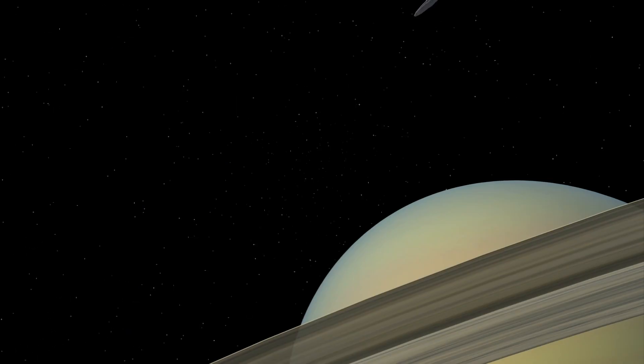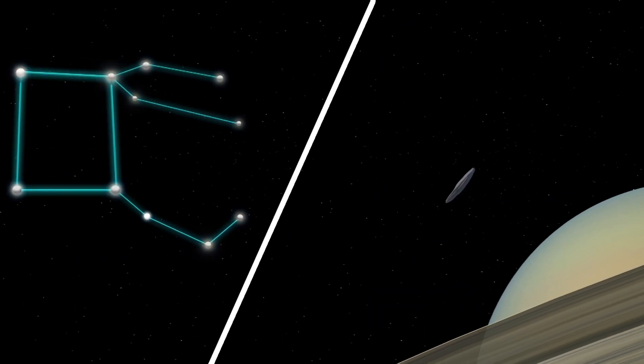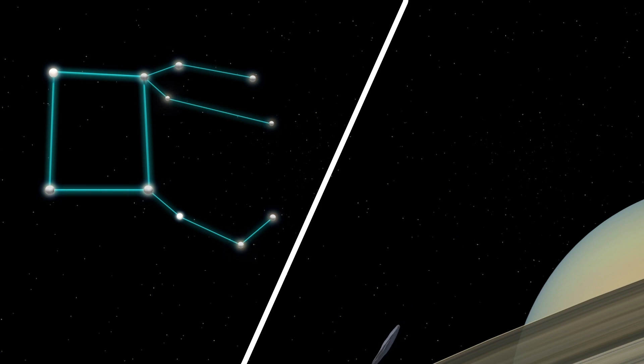When NASA observed it last year, they said the object was traveling at 64,000 kilometers per hour. The space agency noted Oumuamua would exit the solar system in January 2019 after passing through Saturn's orbit. Its next destination is the Pegasus constellation.